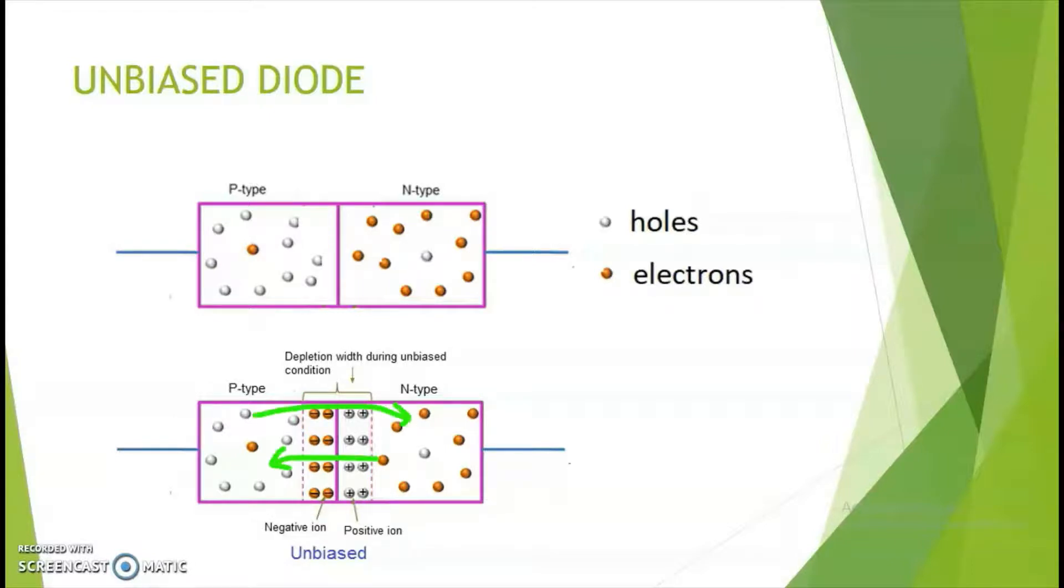If electrons or holes need to cross the barrier, some extra energy like a battery needs to be connected.